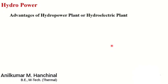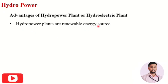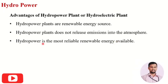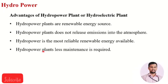Let us see the advantages of hydropower plants. Hydro plants are a renewable energy source. Hydropower plants do not release emissions into the atmosphere, as there is no burning of any fuel involved in the process. Hydropower is the most reliable and renewable energy available, since water is the most abundant substance on the planet. Hydropower plants also require less maintenance.